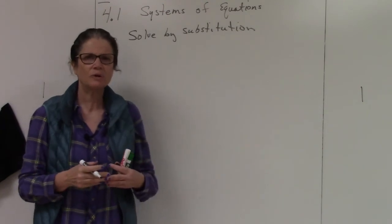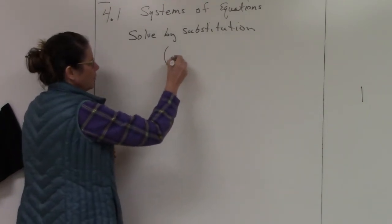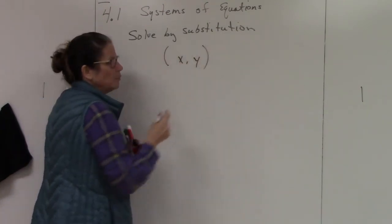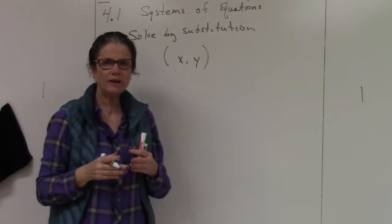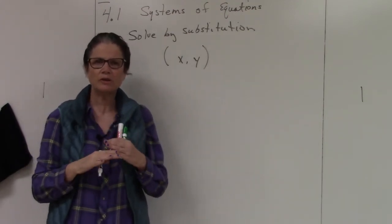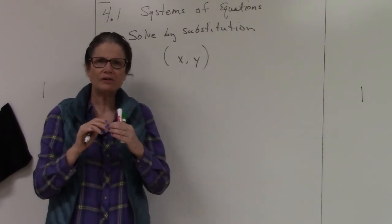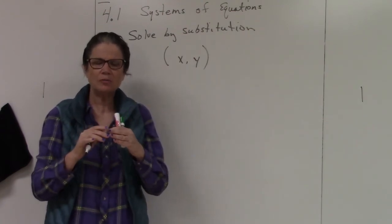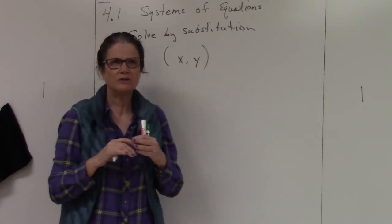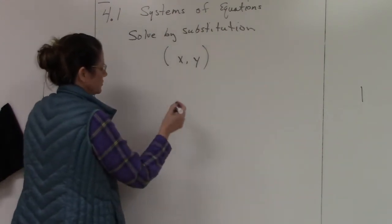So when I say solve for, what I want is I'm always going to find a point. The point is where the two lines cross. That's what we're looking for—the one point where that value, the address to that point, will satisfy both equations.